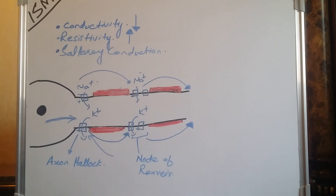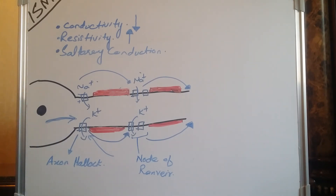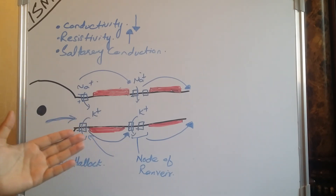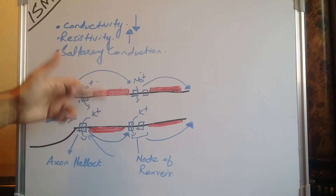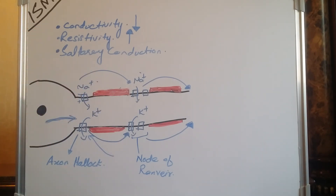This is all about myelination. A myelinated neuron can conduct impulses faster than an unmyelinated neuron because of the presence of the lipid layer around the axons, which decreases conductivity by increasing the resistivity or resistance to the flow of charges inside and outside. In the next lecture, we will discuss the pathology of neurons.